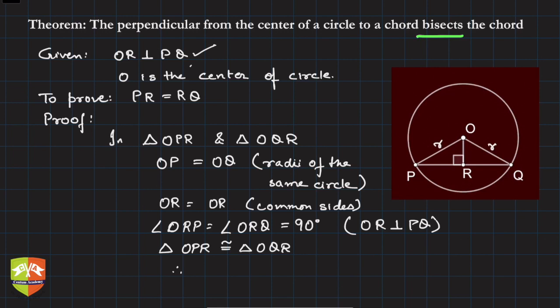Therefore, we will write PR is equal to QR. Why? This is CPCT, corresponding parts of congruent triangles. And that's what we wanted to prove. PR is equal to QR, hence proved.